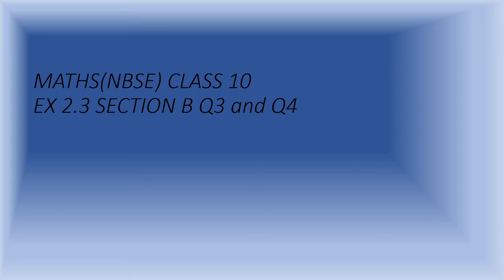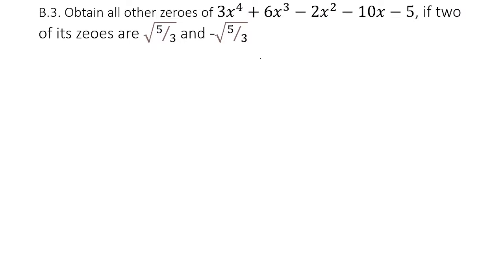Welcome back students. In this video we will be doing question number 3 and 4. We are asked to obtain all the zeros of the given equation if two of its zeros are root over 5 by 3 and minus root 5 by 3.